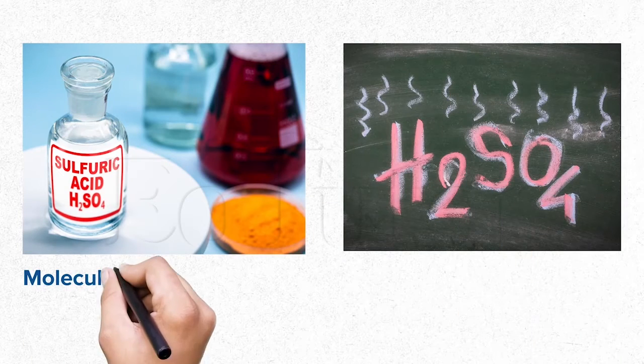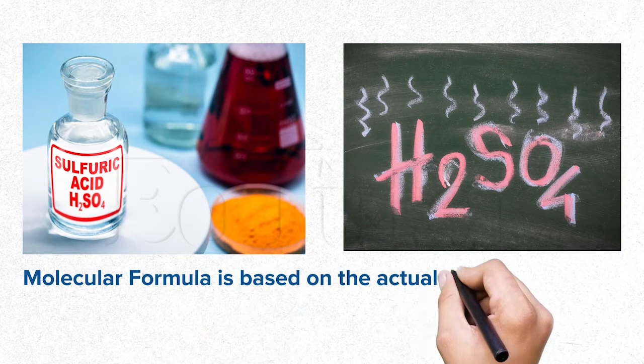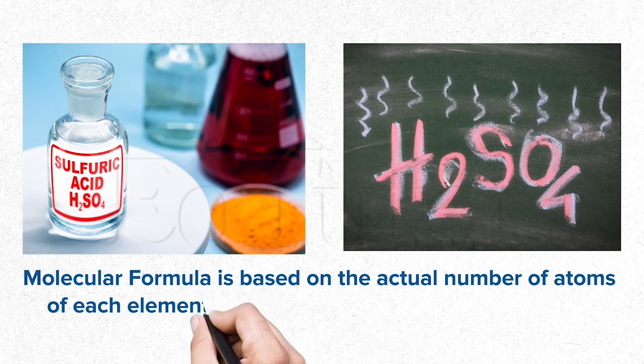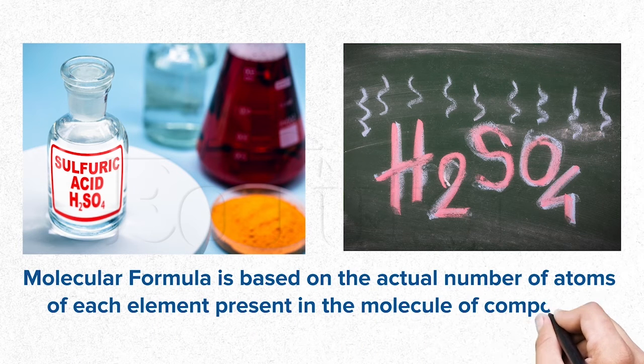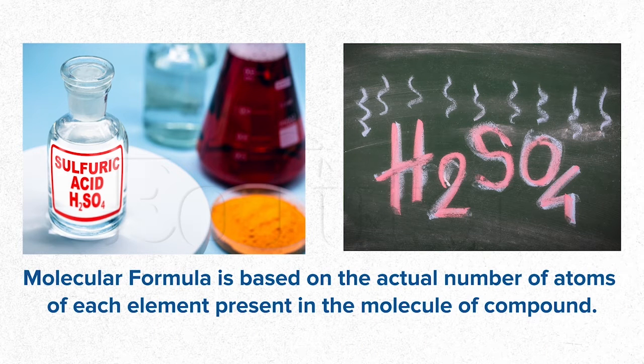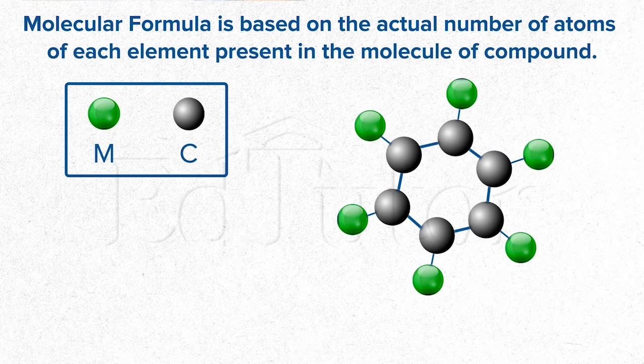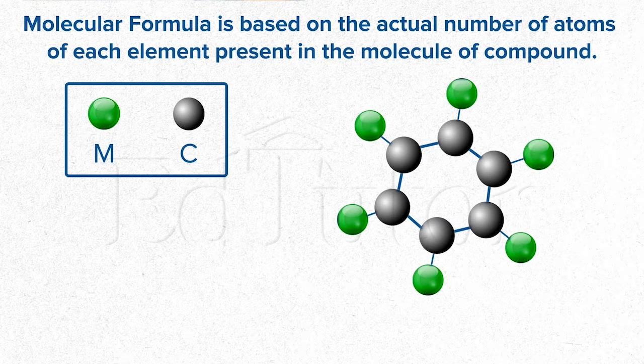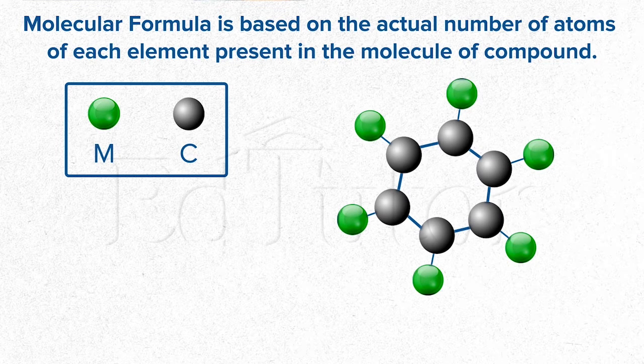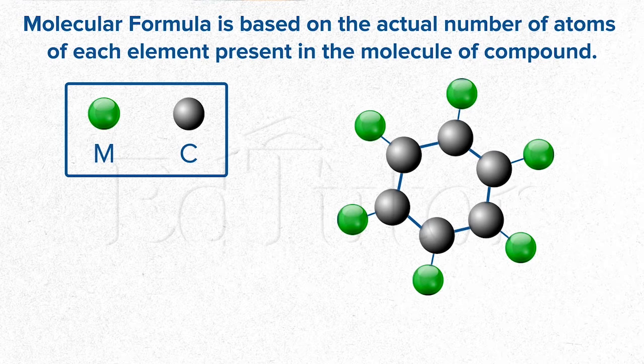Well, by definition, the formula of a substance that is based on the actual molecule is called a molecular formula. It consists of chemical symbols of the elements with numeric subscripts describing the number of atoms for each element present in that molecule.